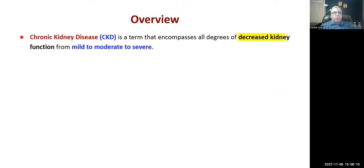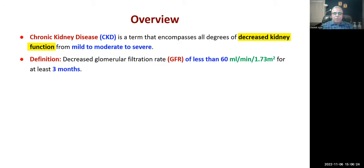We'll start with the overview. Chronic kidney disease is a term that encompasses all degrees of decreased function of the kidneys, from mild to moderate to severe. The definition of chronic kidney disease is a decreased GFR — glomerular filtration rate — of less than 60 ml per minute per 1.73 meters squared for at least three months. Please remember this definition, as I could ask it in a short answer question.